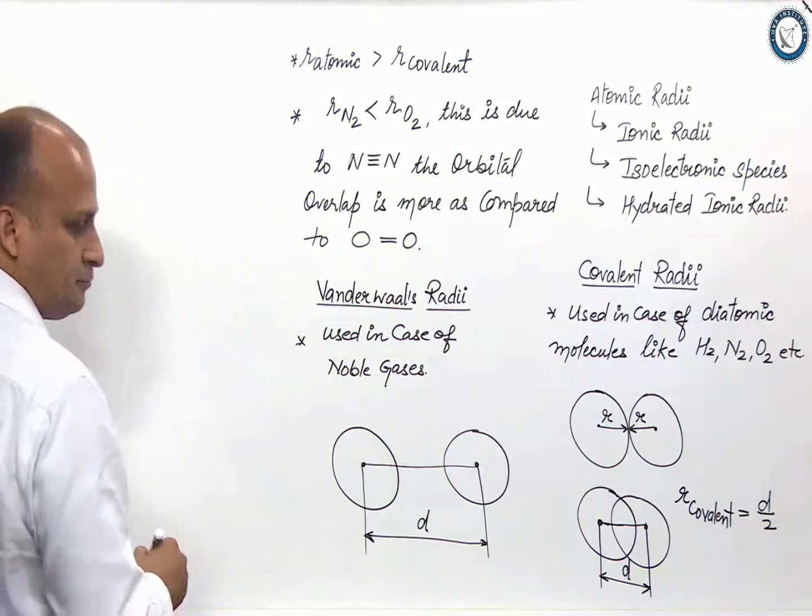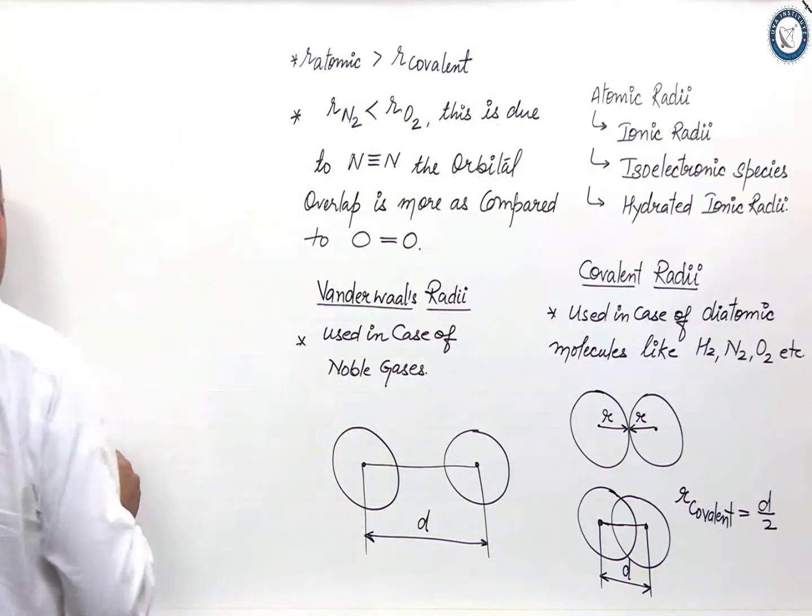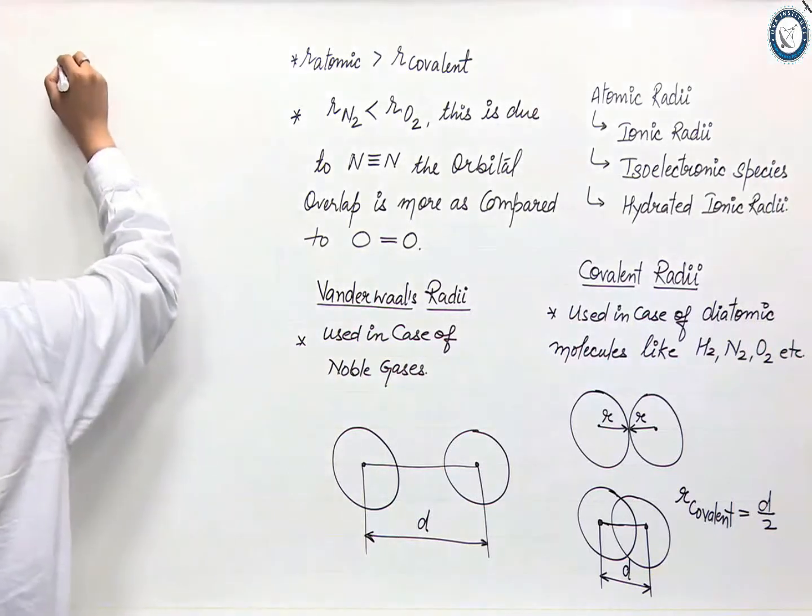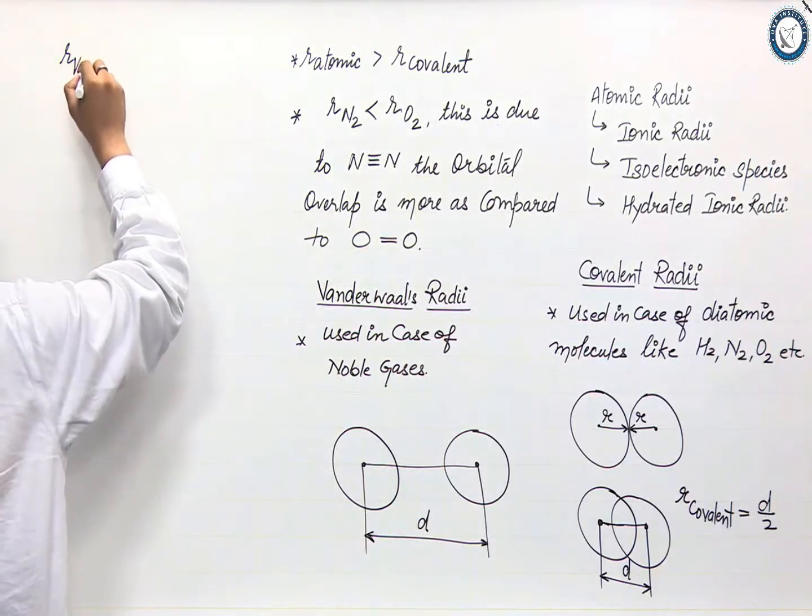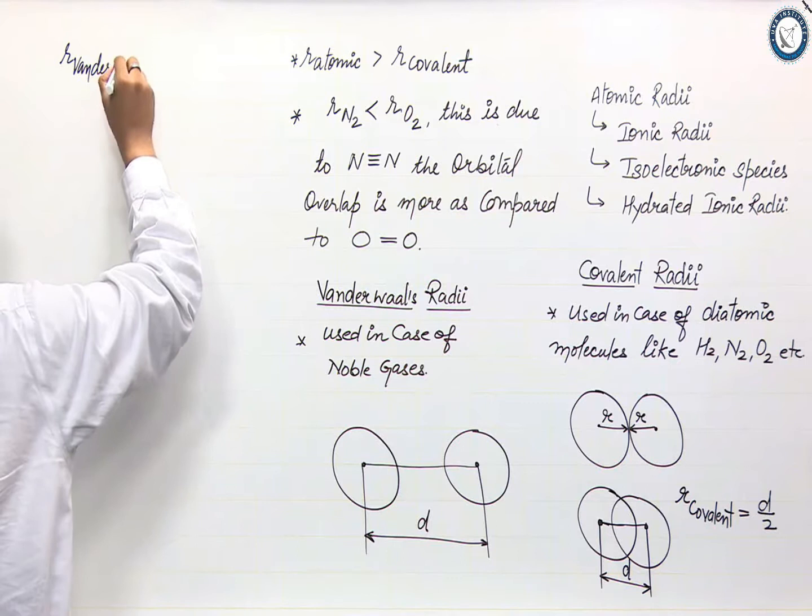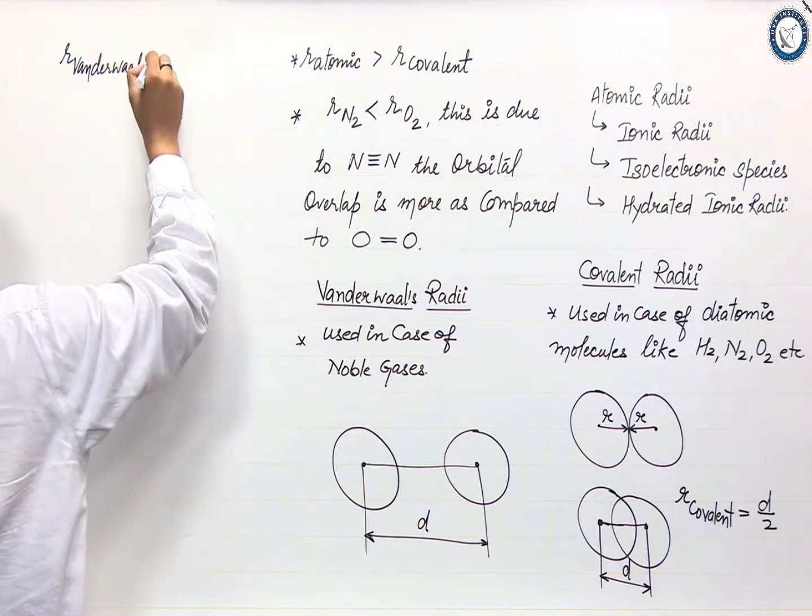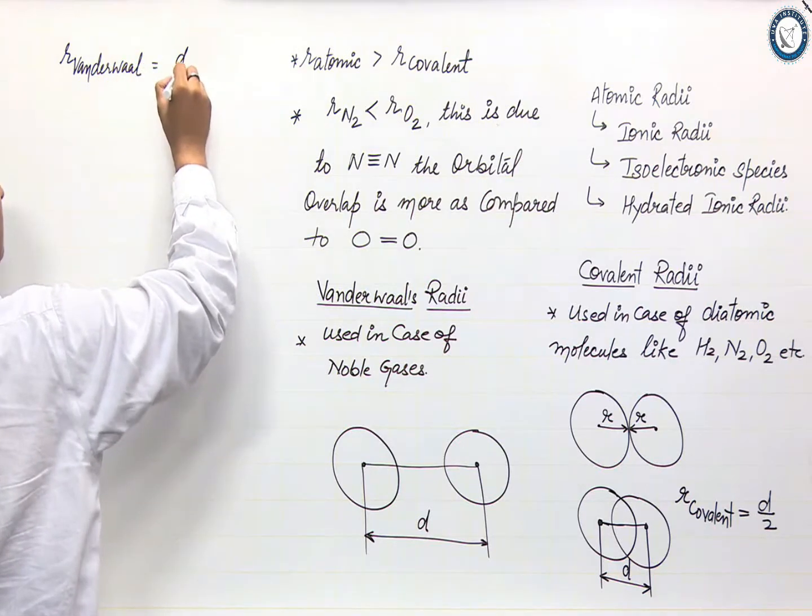If this is d, then r Van der Waals will be d by 2.